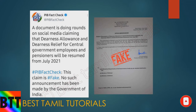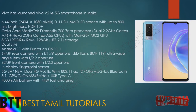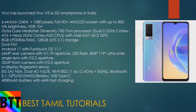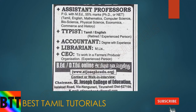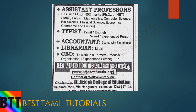The central government has issued a fake certificate warning. In Vivo, there is a mobile version launched. There is a 5G smartphone available — you can see the official website. As you can see, there is an advertisement for job requirements including assistant professor, typist, accountant, librarian, and CEO positions.